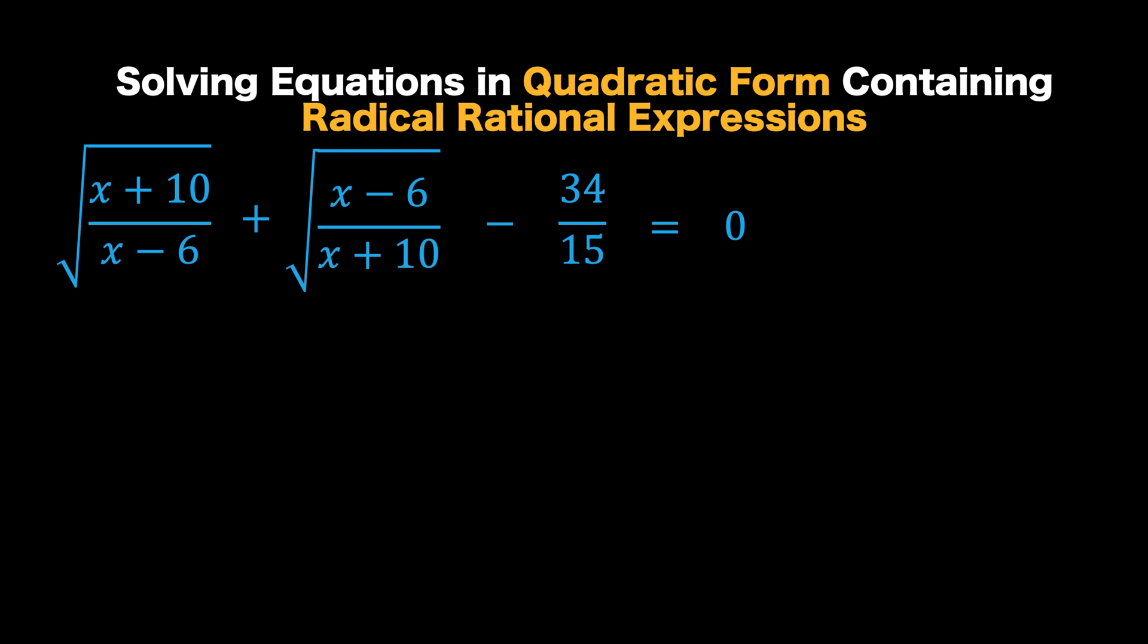The first thing that we are going to do is to simplify the way we write this equation, because this looks so complicated. We can achieve that by introducing a variable. Let's call that variable u. Now, we let u be equal to this first radical rational expression,